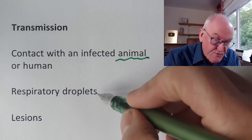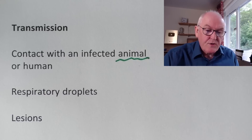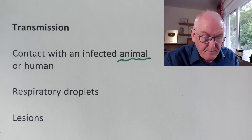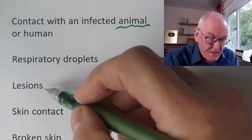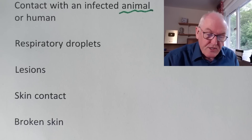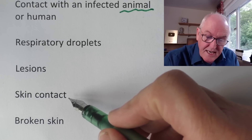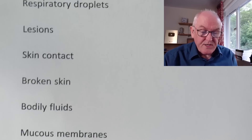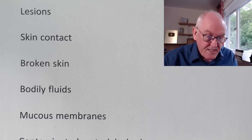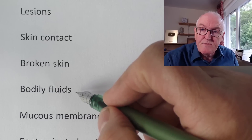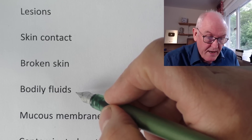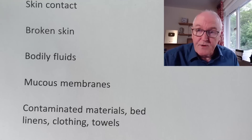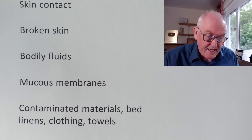It's spread in respiratory droplets, so you can breathe it in through other people's exhaled air. It can be transmitted from the lesions — that means the spots. It can also be transmitted by close direct skin-to-skin contact, especially if there's some broken skin. It can also be transmitted in body fluids, and some of the transmission at the moment is occurring in the male homosexual community, as the mucous membranes component indicates.